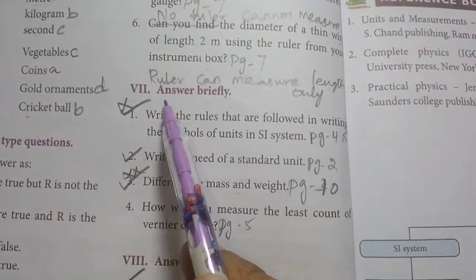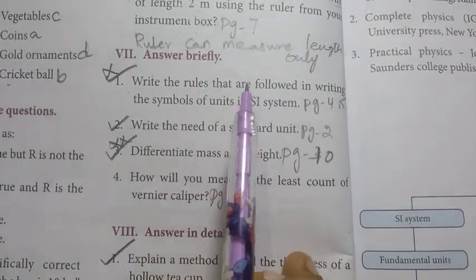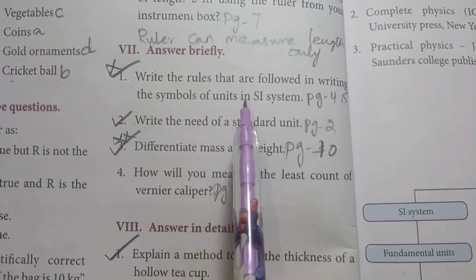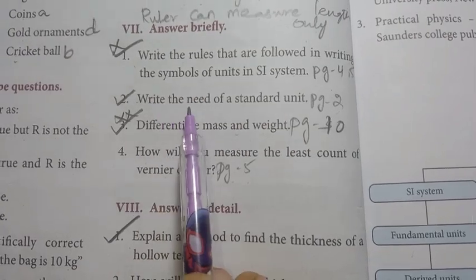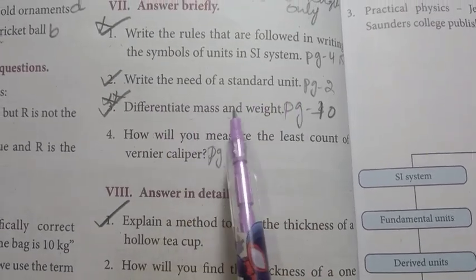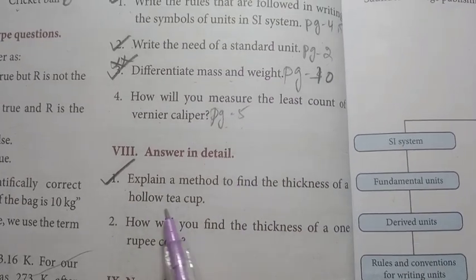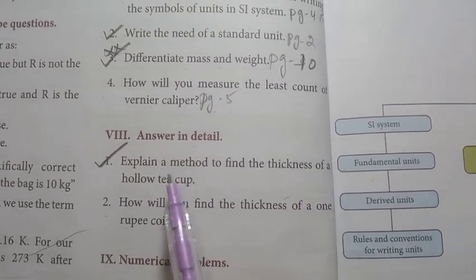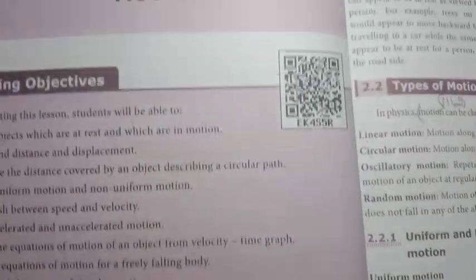Under Roman numeral 7, answer briefly: first, write the rules followed in writing the symbols of units in the SI system — very important. Then write the need of a standard unit, and differentiate mass and weight — more important. For detail questions, explain a method to find the thickness of a hollow tea cup.